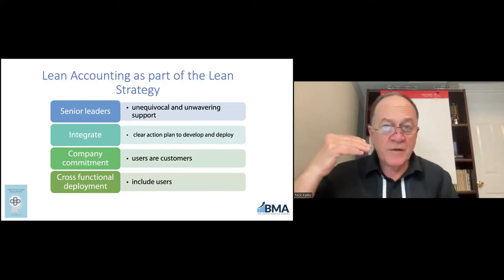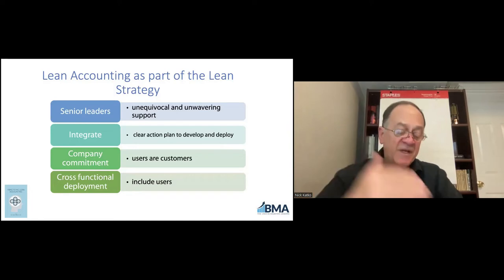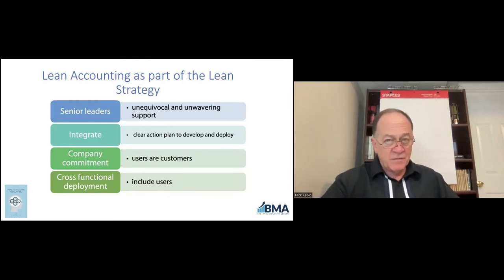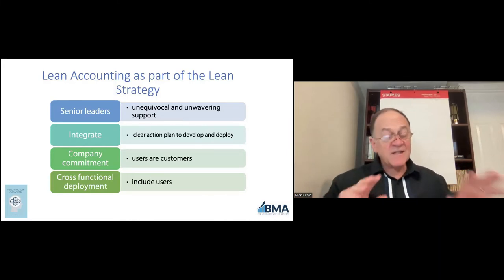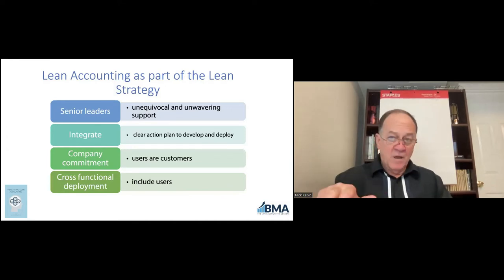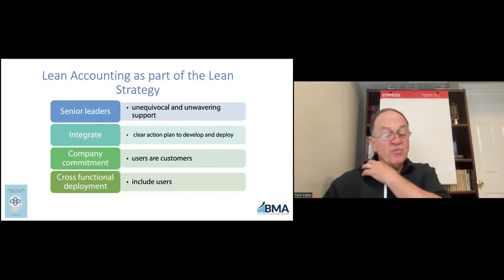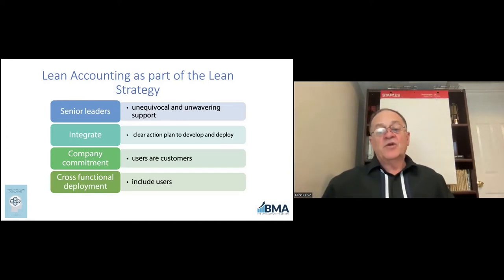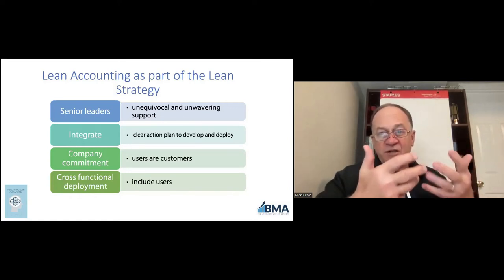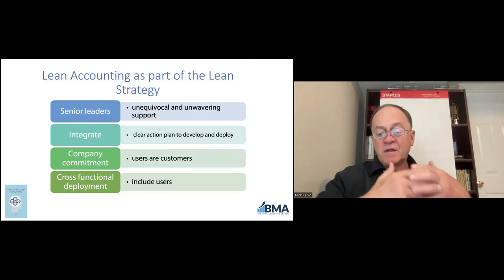When senior leaders stand up and say lean accounting is part of our plan, it will work — the company will make it happen. But when that doesn't happen, there are chances that things could get in the way of lean accounting, or it might not have the total support of everyone in the company. So make it part of the plan and make sure the senior leaders articulate that in a very clear way.